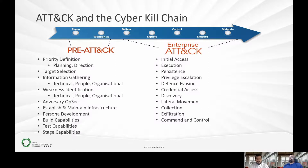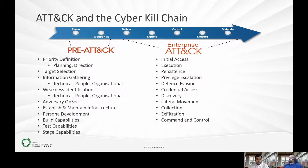The attack matrix covers different tactics followed by adversaries to gain access to organizations, starting with initial access, execution, persistence, privilege escalation, defense evasion, credential access, discovery, lateral movement, collection, exfiltration, and C2 or command and control.